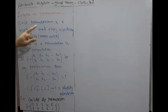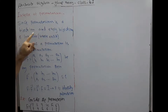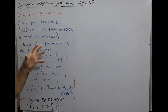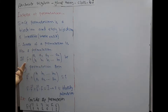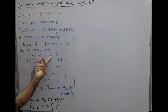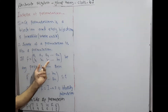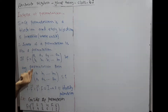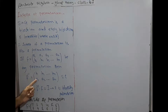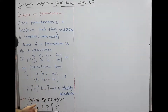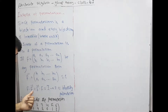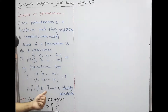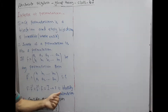Inverse of permutation: since a permutation is a bijection and every bijection is invertible, therefore the inverse of a permutation is also a permutation. If F equals (A1 A2 A3 ... An / B1 B2 B3 ... Bn), then the inverse is F⁻¹ = (B1 B2 ... Bn / A1 A2 ... An), such that F∘F⁻¹ = F⁻¹∘F = identity permutation.